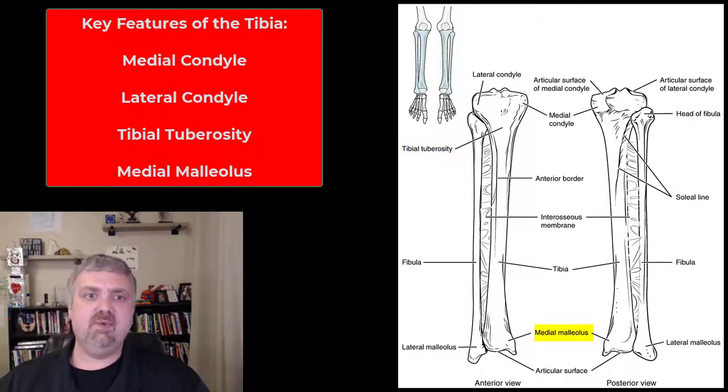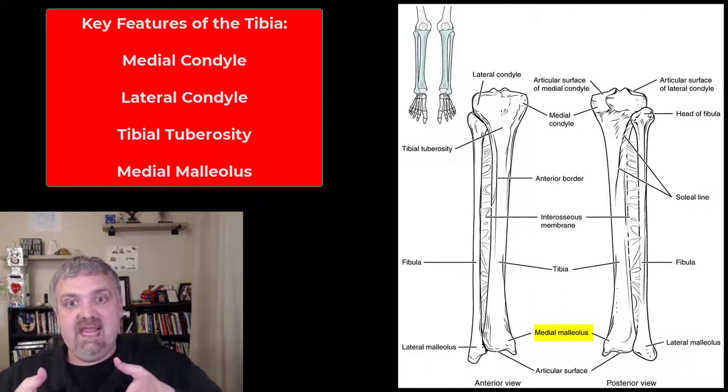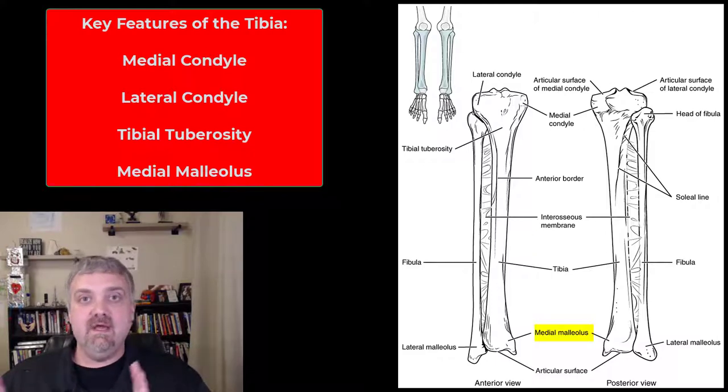The last key structure with the tibia there is the medial malleolus on the bottom. You'll notice that the medial malleolus of the tibia and the lateral malleolus of the fibula, they kind of frame the ankle the same way the styloid processes of the radius and ulna frame the wrist.